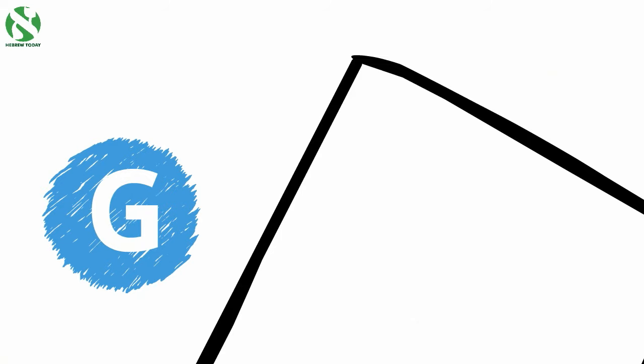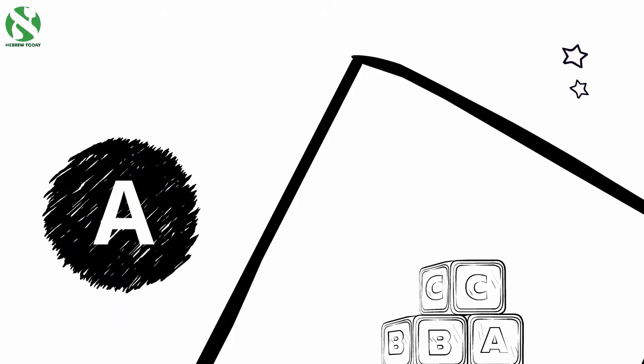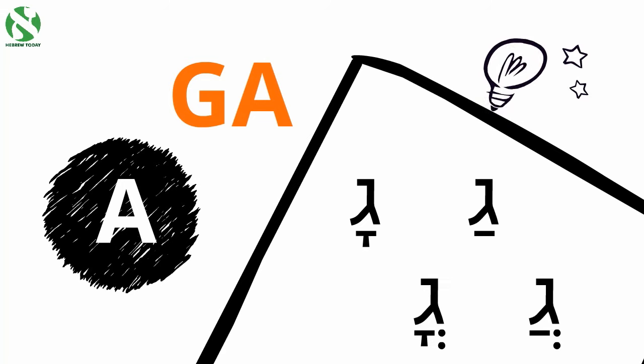We'll begin with the Nikud sound A like in the English word blocks. In order to make the GA sound, we add different Nikud symbols to the letter Gimel. So it could look like this, like this, or even like this. They all make the GA sound.